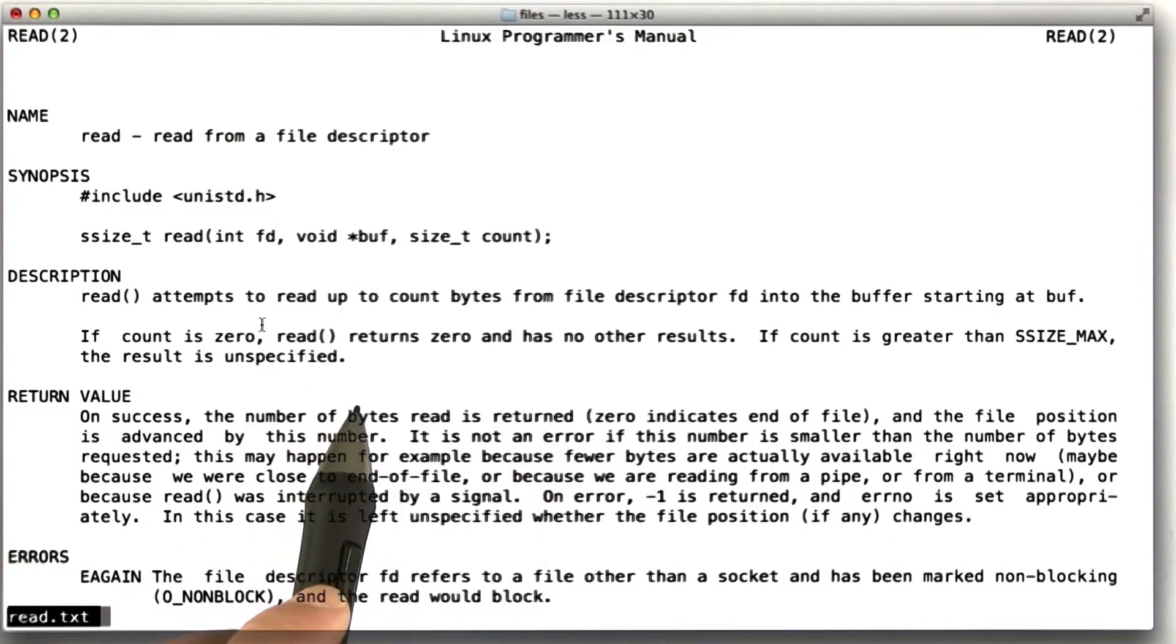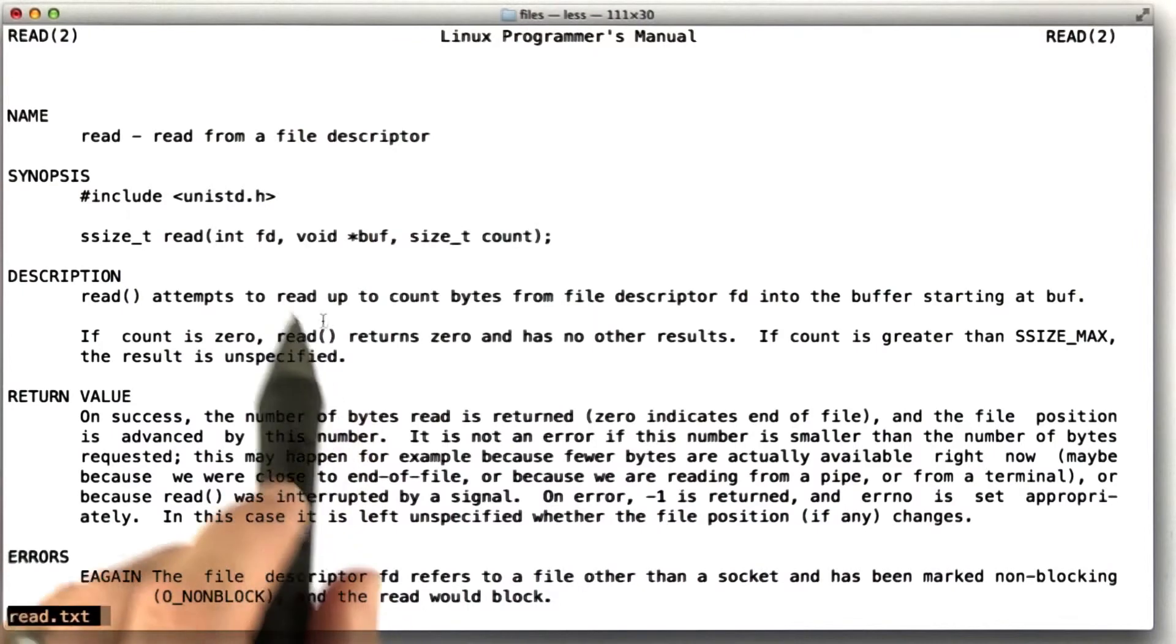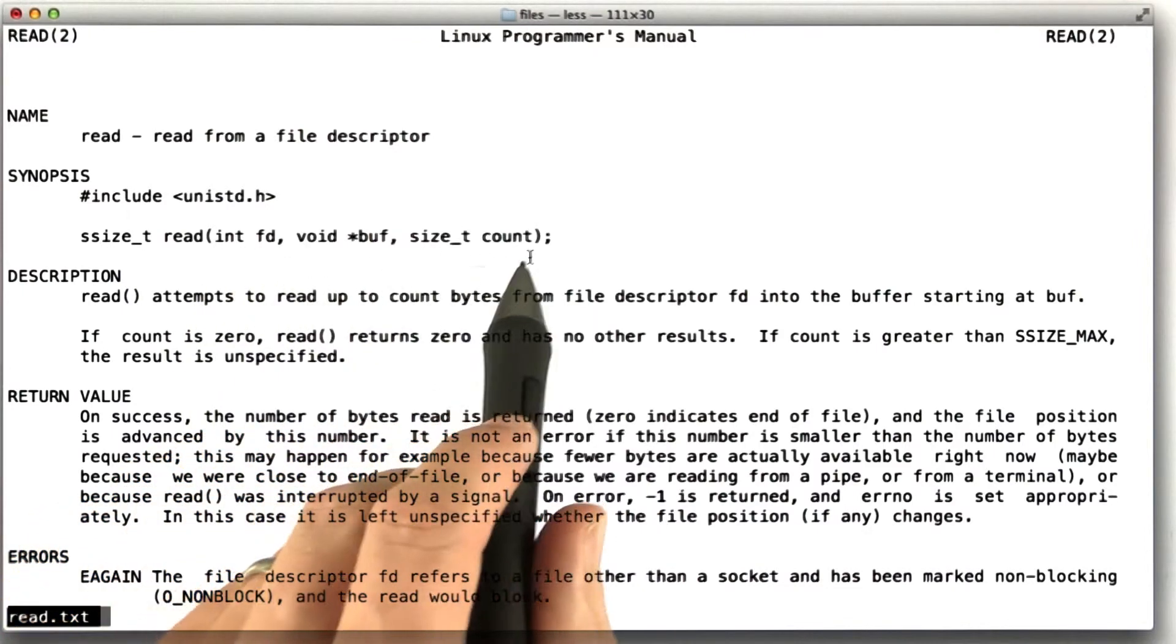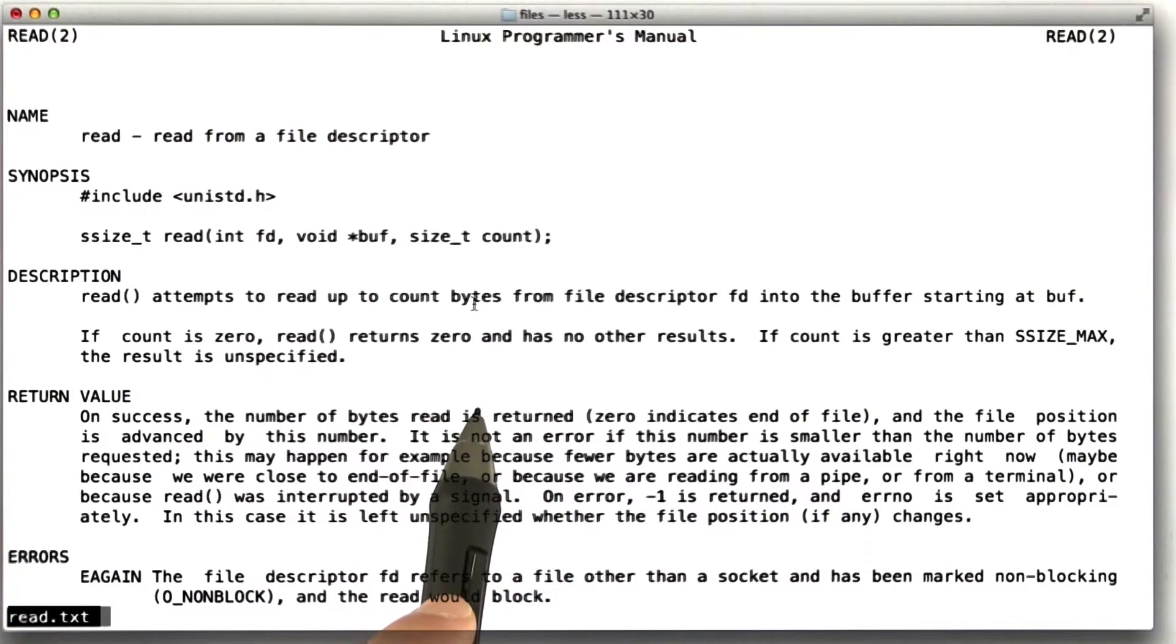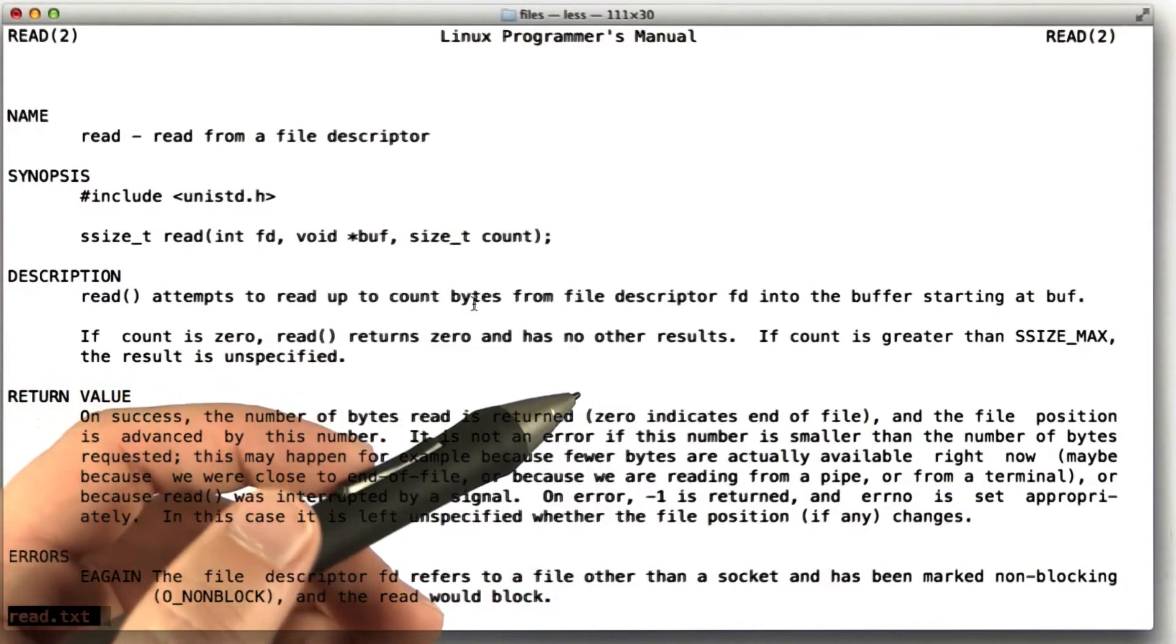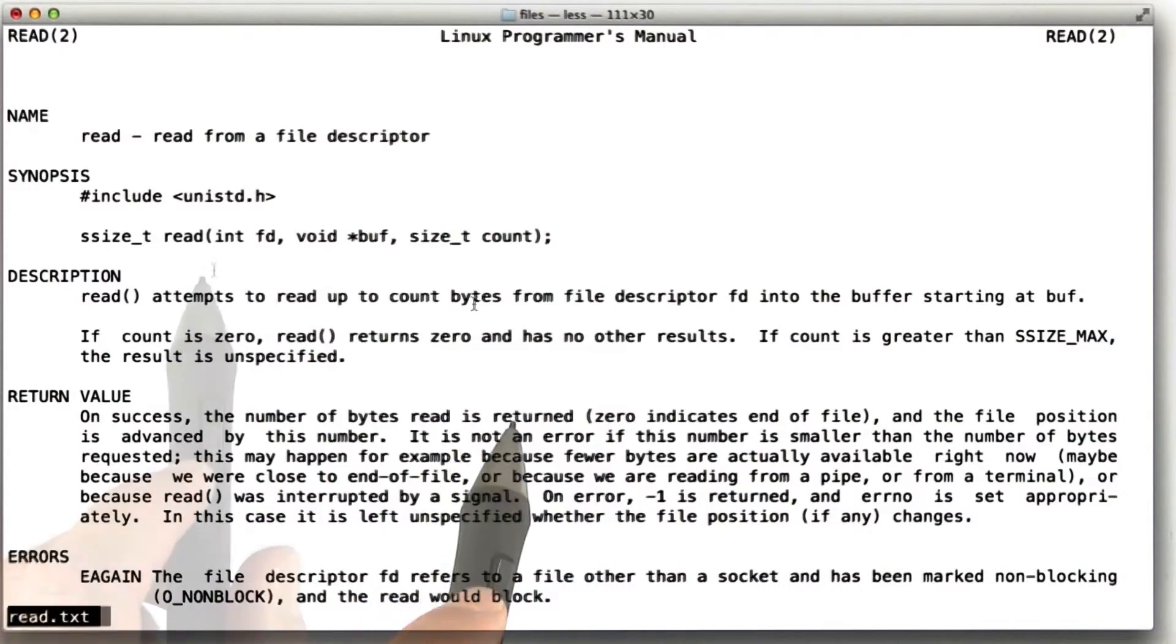And so earlier, we were concerned with the domain of the read system call. That is to say, the set of possible valid arguments to the read system call. And now we're concerned with the range. Because now we're not testing the Unix operating system anymore. We're testing a program that runs on top of the Unix operating system. And so it's the response of the operating system back to the process that concerns us here.